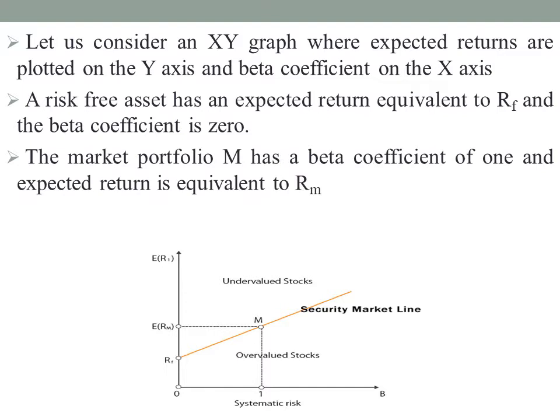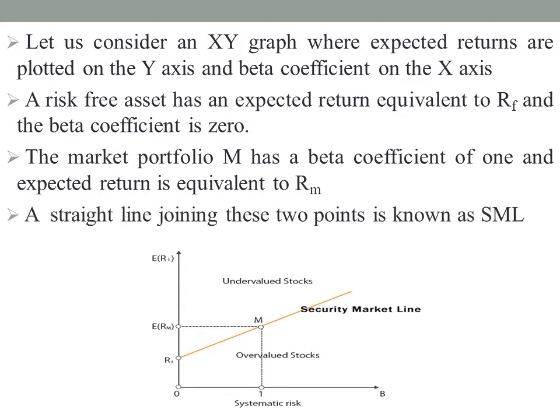When we invest in the market portfolio M, the beta coefficient is 1 and the expected return is equivalent to rm. First we discussed the risk-free asset investment case, and next the market portfolio M, where the beta coefficient is 1. So additional risk return will be added to the investor, and the risk-free rate will be added to the return.